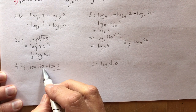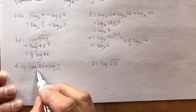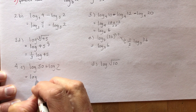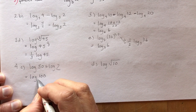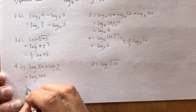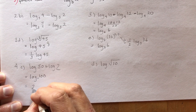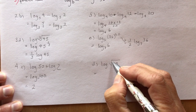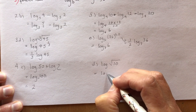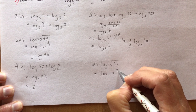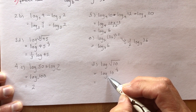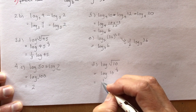Log 50 plus log 2. Remember, if no base is written the base is 10, so they have the same base. That means I multiply them: log of 100. What do I raise 10 to, to get 100? The answer is 2. Next, log of the square root of 10. The square root is the 1/2 power, so this is log of 10 to the 1/2. What do I raise 10 to, to get 10 to the 1/2? The answer is 1/2.